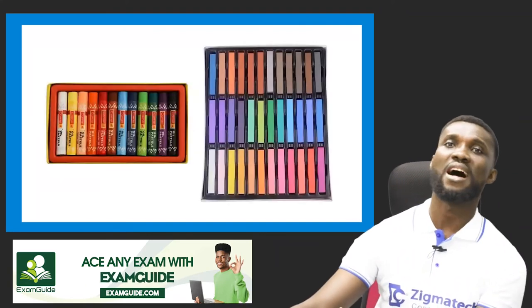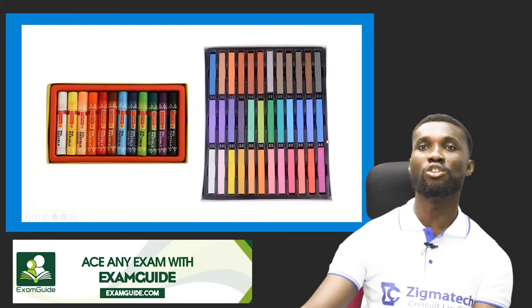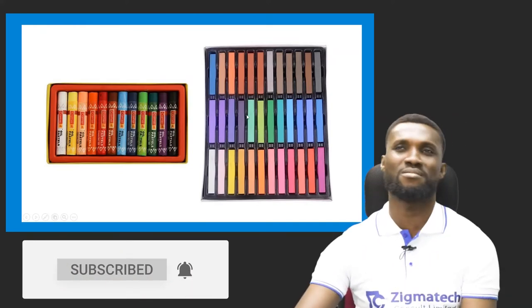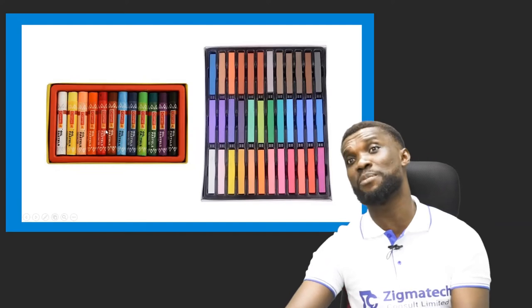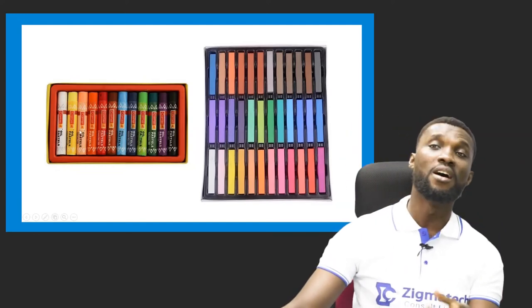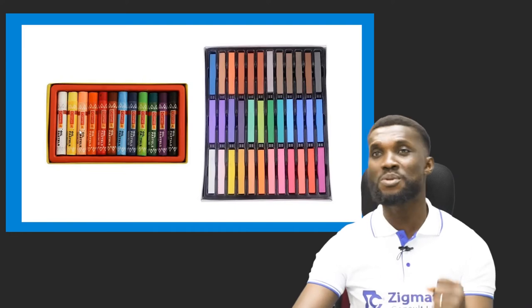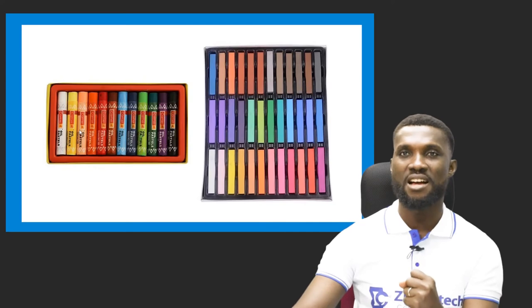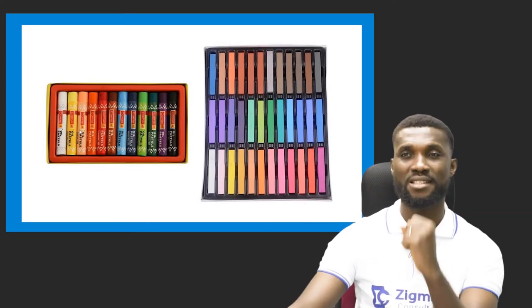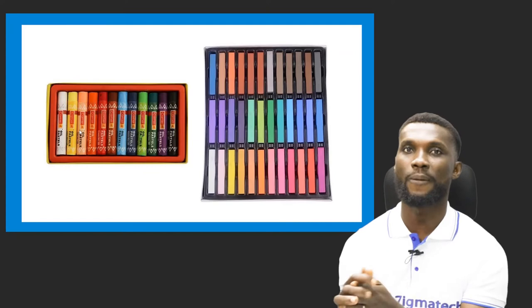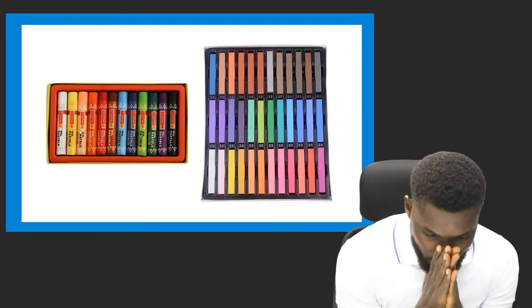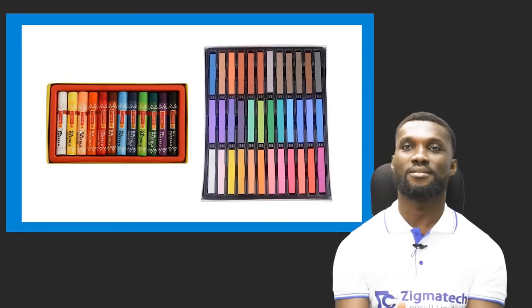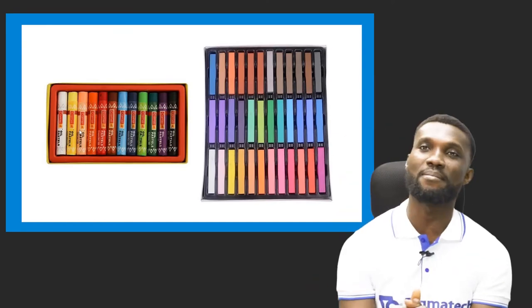Now let's take a good look at how pastels look. The chalk pastel is on the right and the oil pastel is on the left. You might think it looks like a crayon, but it is not — pastels are different from crayon. The major difference is that pastels are stronger: the colors are more vibrant and brighter than crayon. Pastels are quite expensive but produce very beautiful results.